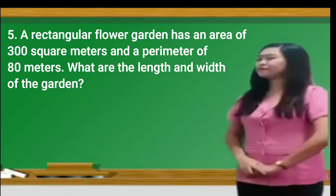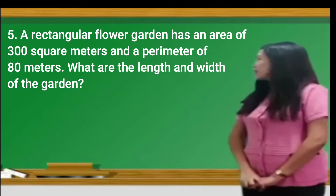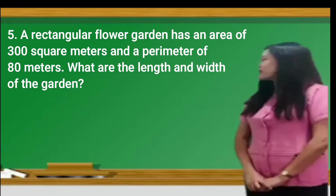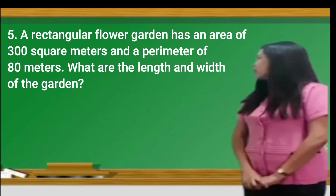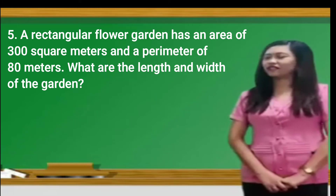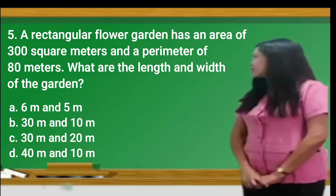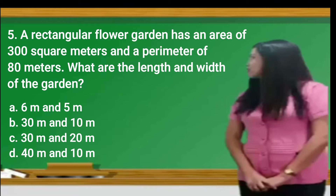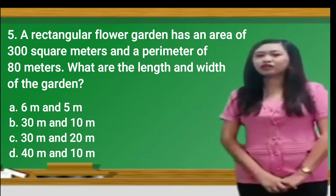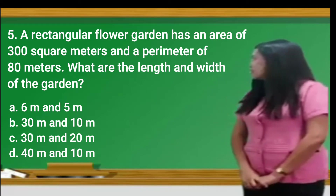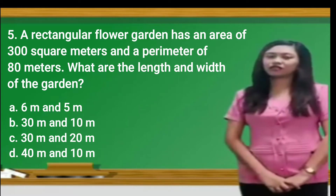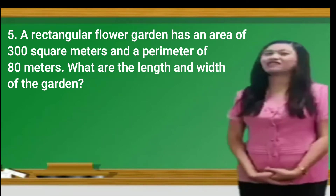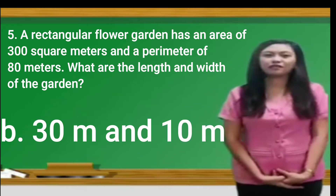Number 5: A rectangular flower garden has an area of 300 square meters and a perimeter of 80 meters. What are the length and width of the garden? A. 6 m and 5 m. B. 30 m and 10 m. C. 30 m and 20 m. D. 40 m and 10 m. The correct answer is B, 30 meters and 10 meters.